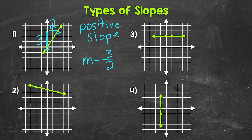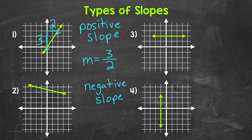Moving on to number two, we have a line moving downward as it's moving from left to right. So there is negative vertical change from left to right. The Y values are decreasing as the X values are increasing. This is an example of a negative slope. Now let's find the slope of this line using two points, working from the left point to the right point. Starting with the rise — here we need to go down in order to align with the other point, down one unit. Since we went down, our rise is negative one.